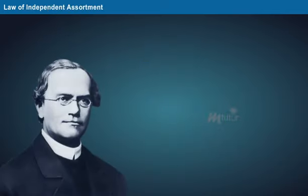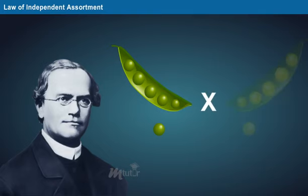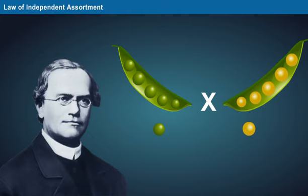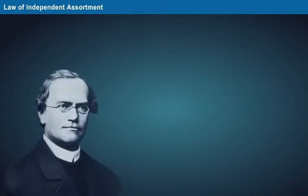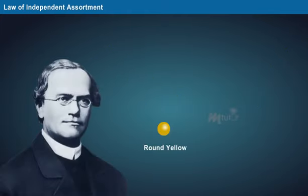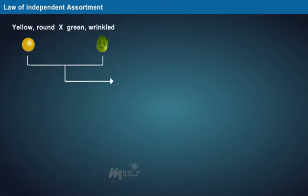Law of independent assortment. The characteristic of independent assortment was observed by Mendel using two traits of the pea plant. Mendel crossbred pea plants producing round and yellow seeds with the plants producing wrinkled and green seeds. In the F1 generation, he observed that the plants expressed only the dominant traits.